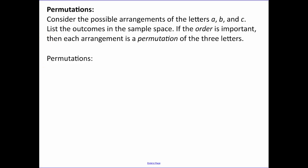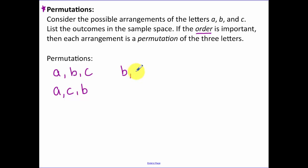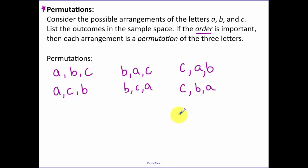Permutations — this is important to understand, especially for statistics and the SAT. Consider the possible arrangements of letters A, B, and C. The order matters, meaning A-B-C and A-C-B are different. With B first: B-A-C and B-C-A. With C first, there are two more. In total, there are six different permutations.